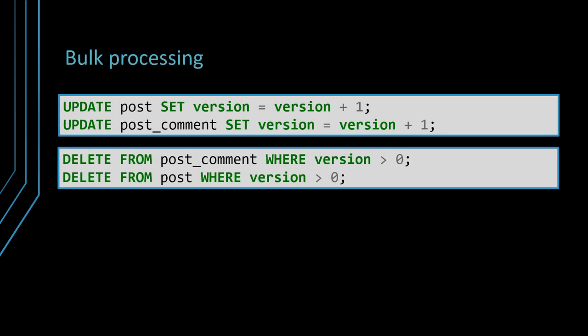Apart from batching, SQL offers bulk operations to modify all rows that satisfy a given filtering criteria. Bulk update and delete statements can also benefit from indexing, just like select statements. To increment the version of all post and post comment records, one would execute bulk update statements. To delete all post and post comment records with a version greater than zero, you can execute two bulk delete statements. The bulk alternative can be orders of magnitude faster than batch updates. However, batch updates can benefit from application-level optimistic locking mechanisms, which are suitable for preventing lost updates when data is loaded in a read-only transaction and written back in a successive write transaction.